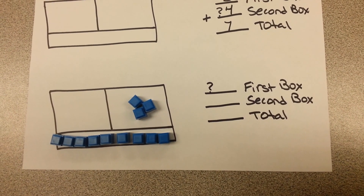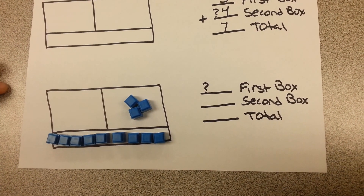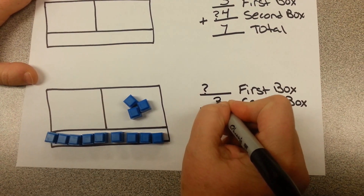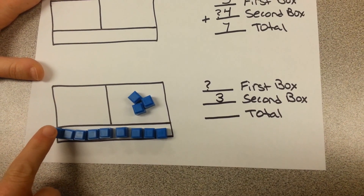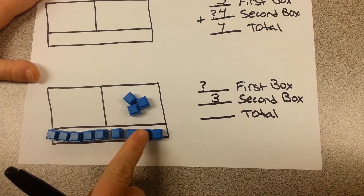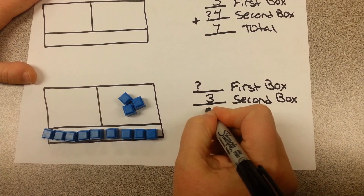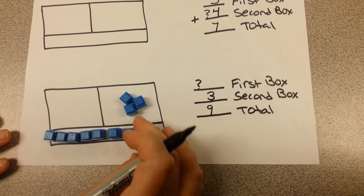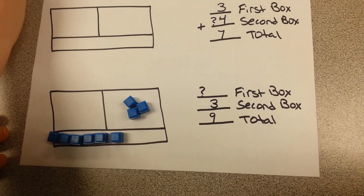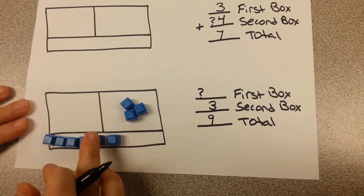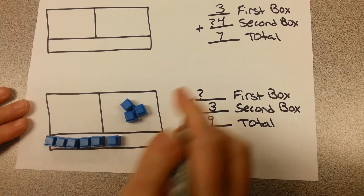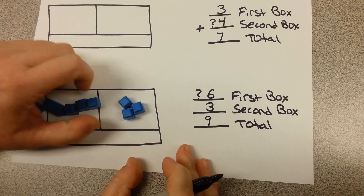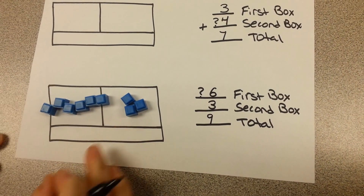Let's try one more. In this case we are going to leave our unknown number in the first box. In the second box we have three blocks, and in our total we have nine blocks. We need to figure out how many blocks would be in our first box. To do that, we take away the three from the second box and see how many are left over — we are left with six. So the unknown plus three from the second box gives us a total of nine.